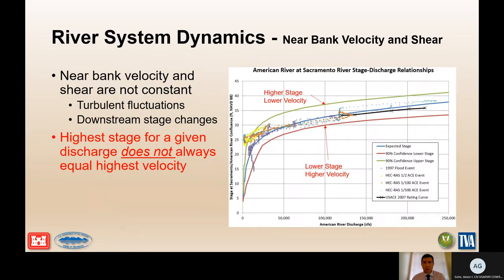Near-bank velocity and shear are not constant — there are turbulent fluctuations with time and downstream changes in the river. A plot of stage at the Sacramento-American River confluence shows that for a given discharge on the American River there can be multiple water surface elevations. The highest stage for a given discharge typically yields lower velocity, while a lower stage yields higher velocity. You have to be careful that the highest stage does not always equal the highest velocity.